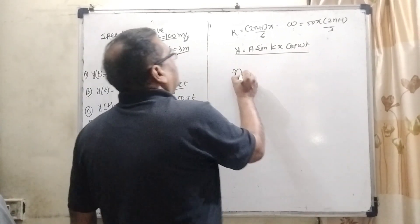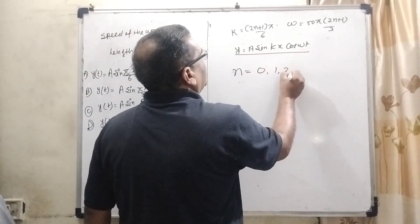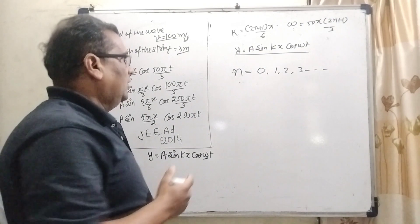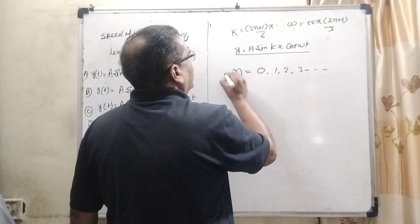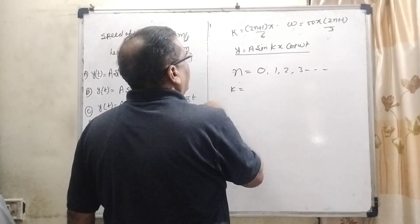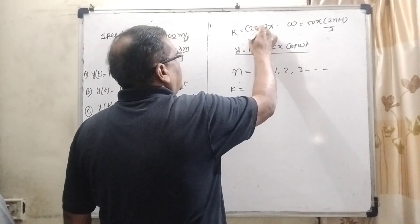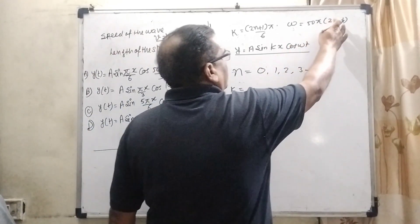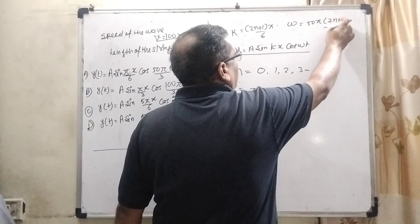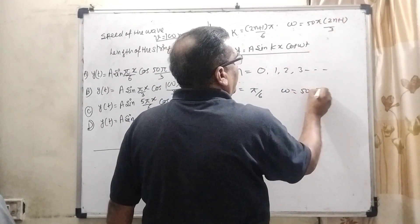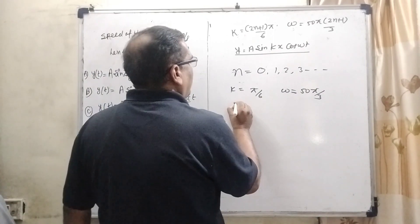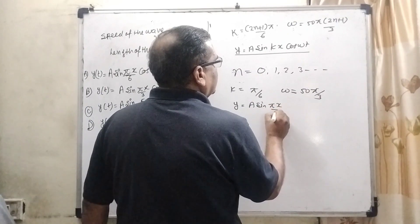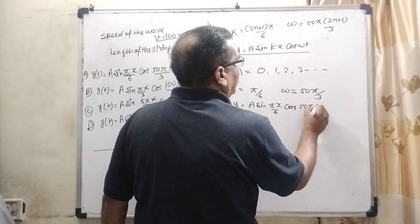Now, put the value of n from 0, 1, 2, 3 and so on. We get the value of k and omega and substitute in the equation to get the results. First, put n equal to 0 and we get k equal to 2 times 0 plus 1, which is pi by 6, and omega is 2 times 0 plus 1 by 3, that is 50 pi by 3. Then the equation is formed: y equal to a sin pi x by 6 cos 50 pi t by 3.